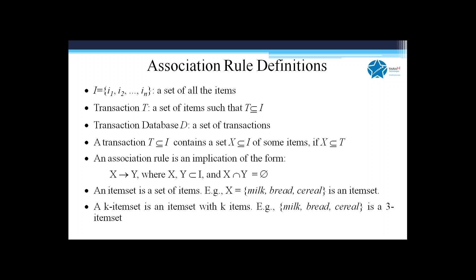X and Y are each an item set — a collection of items. If you bound the size of the item set to size K, that is known as a K-item set. For example, a three-item set could be milk, cereal, and bread. So to be clear: we have a set of retail items, a transaction as items bought in one go, a transaction database as all such transactions.